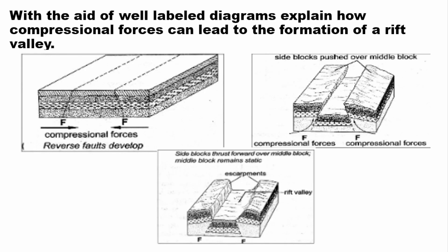With the aid of a well-labelled diagram, explain how compressional forces can lead to the formation of a rift valley. One way is that layers of rocks are subjected to compressional forces, as we can see in this diagram. Then two parallel faults — these fault lines — usually develop.